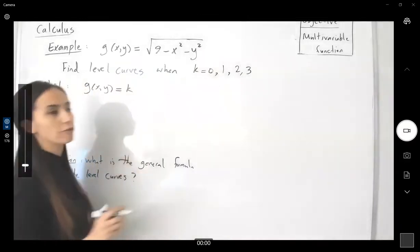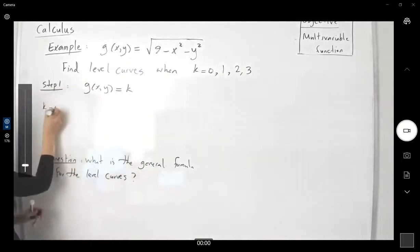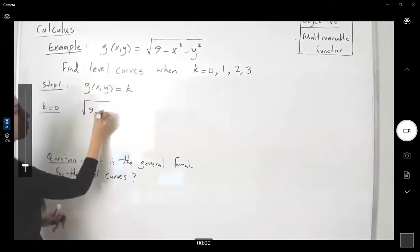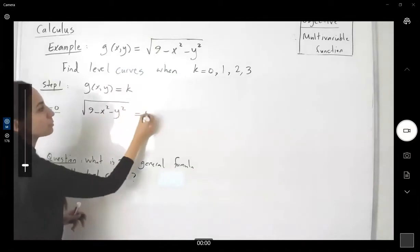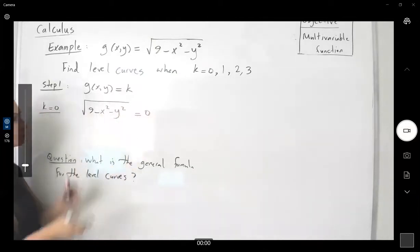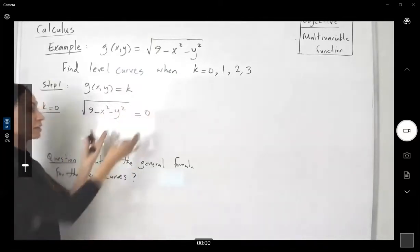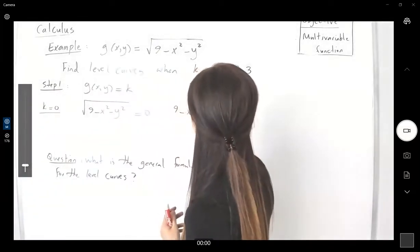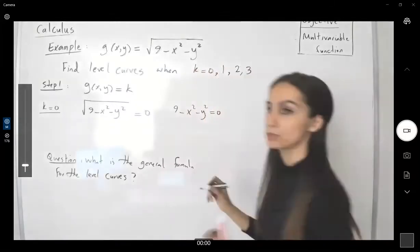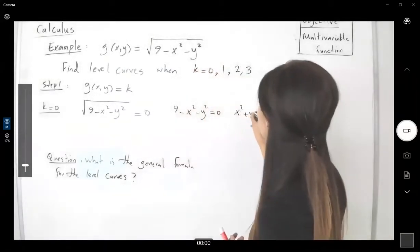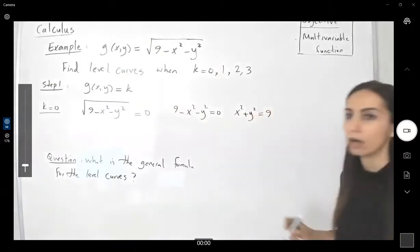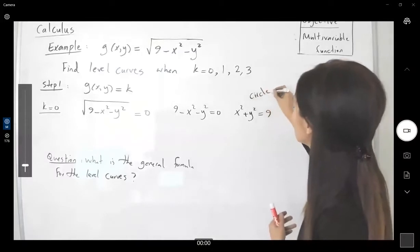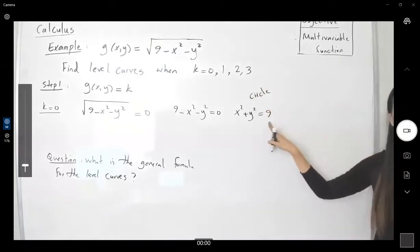What is our first k? Our first k is equal to 0. So when k is equal to 0, it means that the square root of 9 minus x squared minus y squared must be 0. We can raise both sides to the second power and get 9 minus x squared minus y squared equals 0, or x squared plus y squared equals 9. This is just a circle with center at the origin and radius 3.